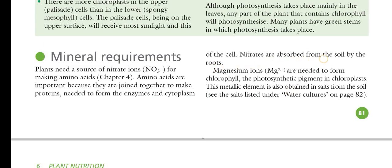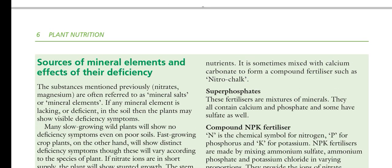Nitrates are absorbed from the soil by roots. Magnesium ions (Mg²⁺) are needed to form chlorophyll — Mg²⁺ is the central atom of the chlorophyll molecule. If there is a magnesium deficiency, the leaf will not appear green; instead, a brown or yellow color will develop. This metallic element is also obtained from salts in the soil.